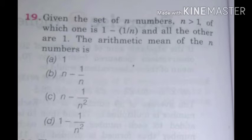The arithmetic mean of the n numbers is: option a is 1, option b is n minus 1 by n, option c is n minus 1 by n square, and option d is 1 minus 1 by n square. So this is a problem of finding arithmetic mean. Let's have a look at the solution.